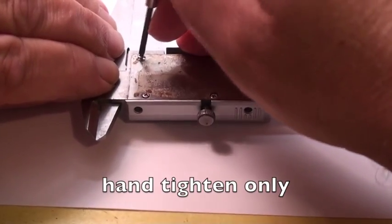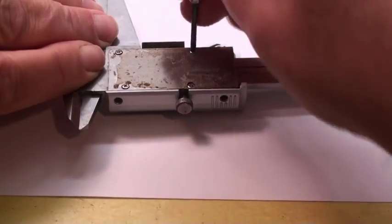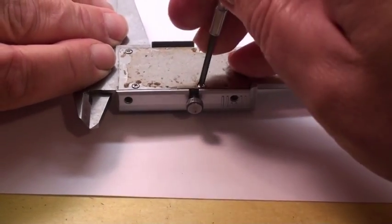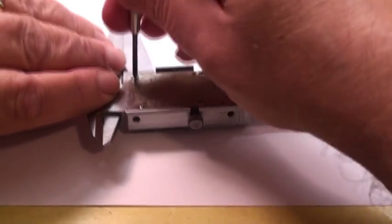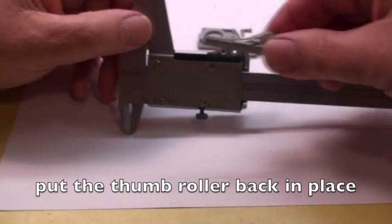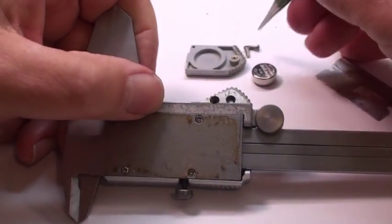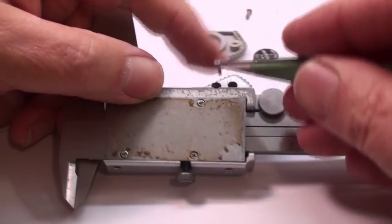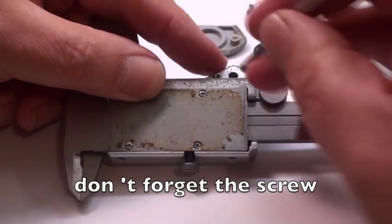Hand-tighten only. Then go around and finish tightening them. Let's put the thumb roller back in, like that, and we have a screw to hold it in.